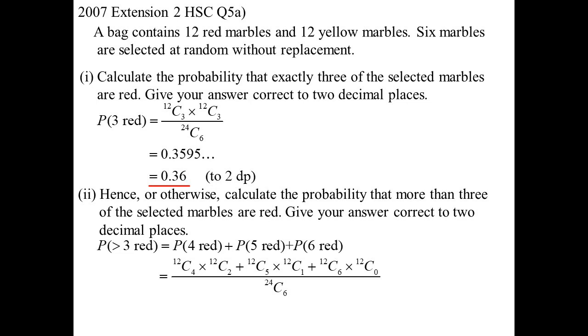So on the top of the fraction, if four are red, that's 12C4, but then two are yellow, 12C2. Or, so plus, five are red, 12C5, which means one's yellow, 12C1. Or, plus, six are red, 12C6. And well, I put 12C0 there, but we don't really need it. 12C0 is equal to one. And that works out to be 0.32.